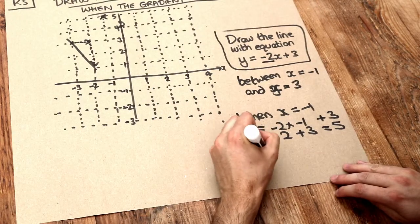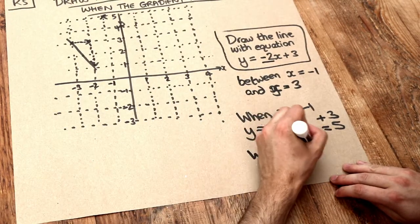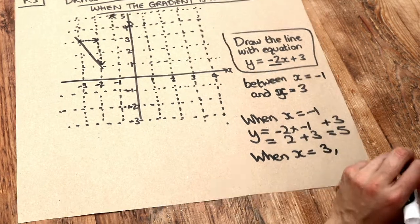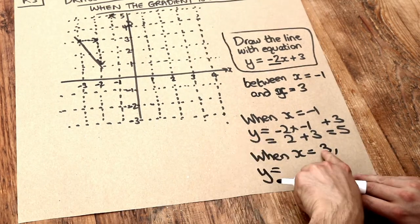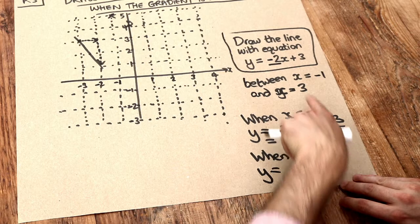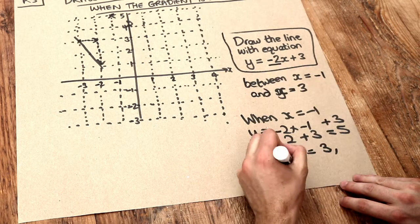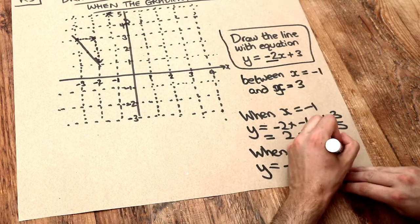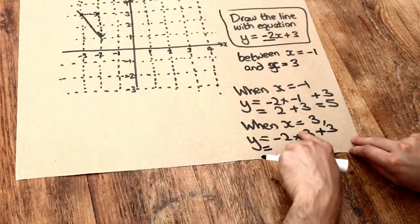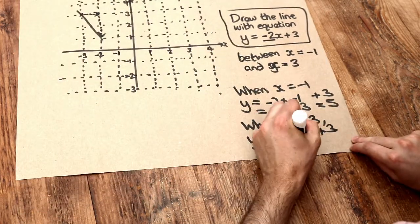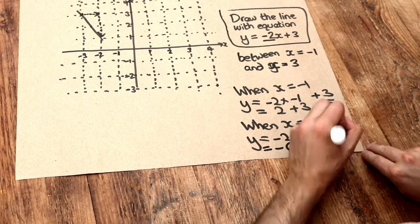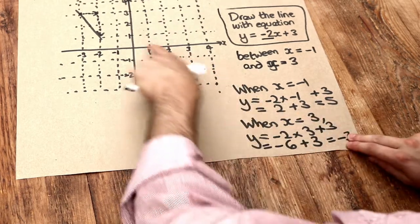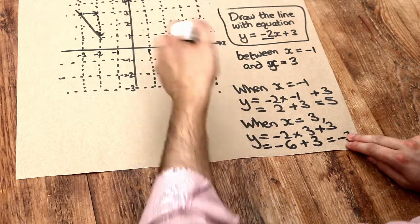What about another point? Let's use the other extreme — when x is 3 at the other end of the line, what will y be? If we substitute this value in, when x is 3, we get minus 2 times 3 plus 3. Minus 2 times 3 is minus 6, plus 3, and that's going to be minus 3. So when x is 3, y is minus 3 — so 3, minus 3 is down here.